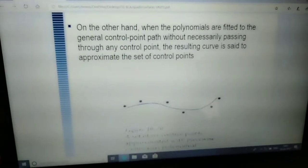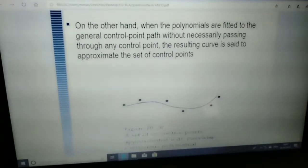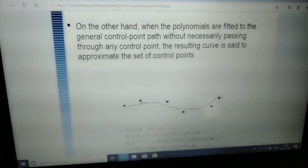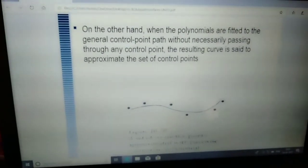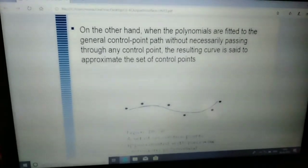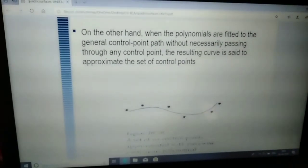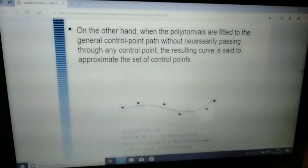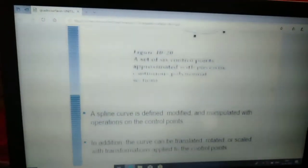So there are two types of splines: one is interpolation, in which the control points are on the line, and one is approximation, in which the control points are above or below the line.